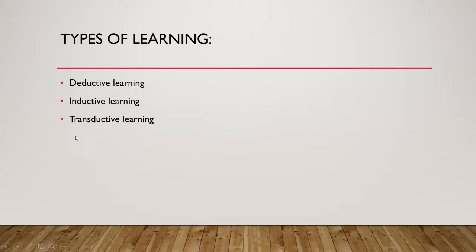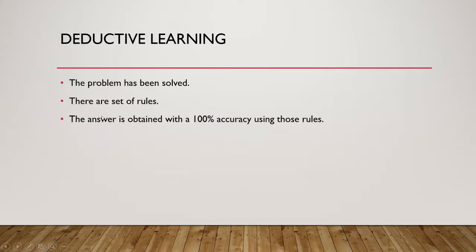There are three types of learning that we will focus on: deductive learning, inductive learning, and transductive learning. Deductive learning is when you have a set of rules that are given to you for a particular problem — that problem is actually solved or well-defined — and using those rules, you can always get the answer, no matter the question. For example, addition: 2 plus 2 will always be 4. It can never change; it is irrespective of the case because addition is well-defined.